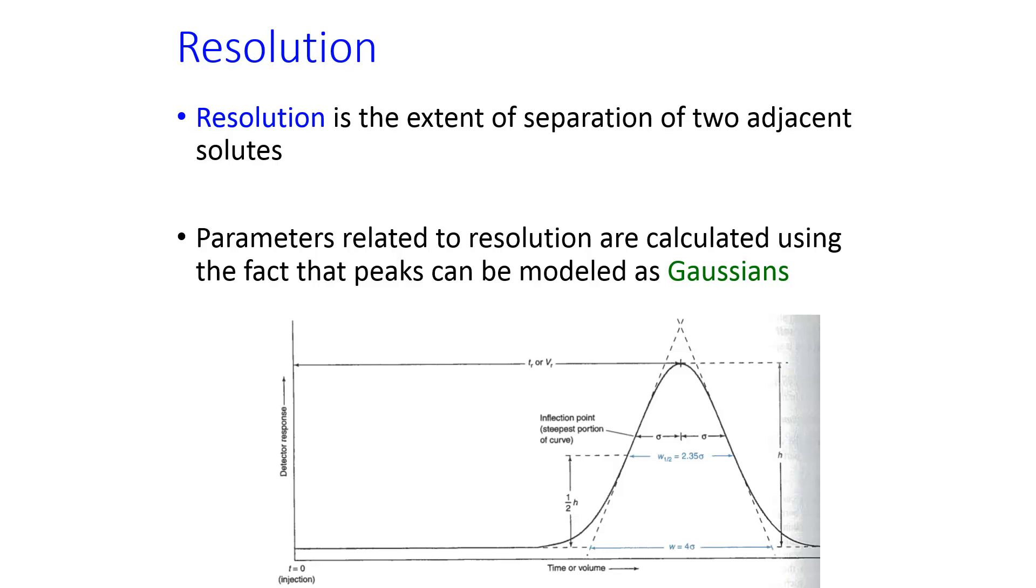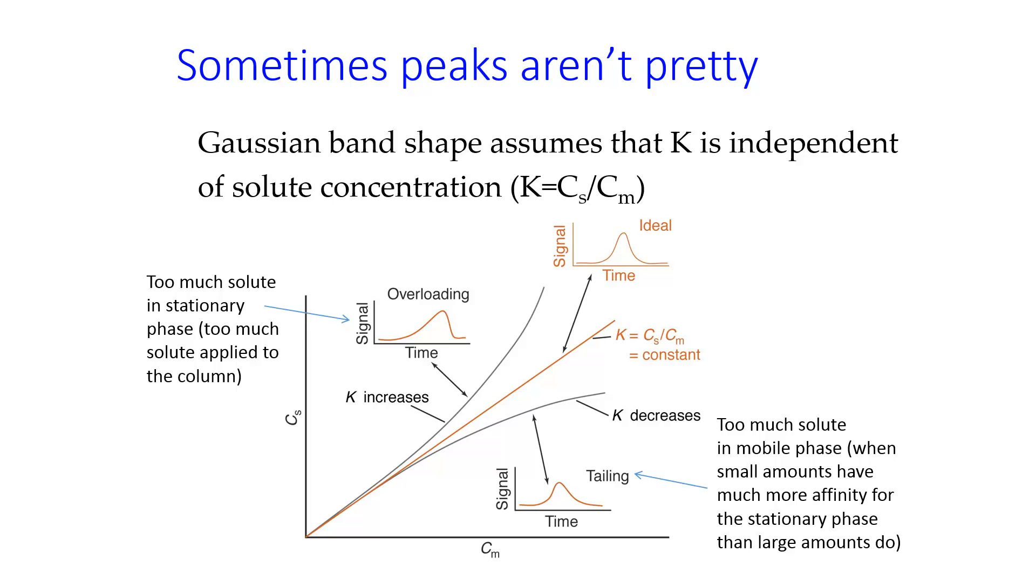Sometimes, though, the peaks aren't pretty. And there are broadening factors and other factors that can cause the peaks to not be Gaussians, but to have either tailing or overloading or just spread out quite a bit. Tailing and overloading, in specific, are caused by having either too much solute in the stationary phase, so overloading the column, or too much in the mobile phase, so it's not really interacting with the column. In either case, these things are to be avoided, and you can avoid this by using the correct injection volume and by using the correct mobile phase and stationary phase for your analyte.